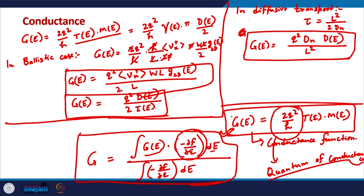To briefly summarize: in near-equilibrium transport, F1 − F2 can be written as −(∂f/∂E)·δEF, and from this we can deduce that the conductance — both in ballistic and diffusive transport — is the average of the conductance function over the Fermi window. Conduction pathways far from the Fermi level do not contribute to conductance. We will discuss bulk transport and more about this in the coming classes. Thank you for your attention; see you in the next class.